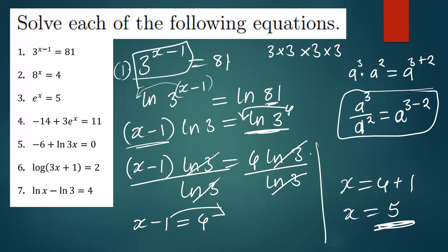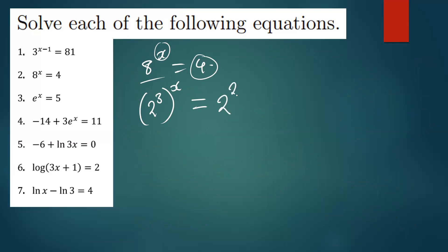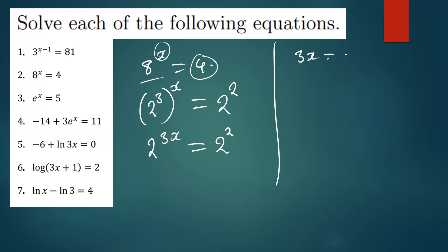The next question is 8^x = 4. We can express 8 in terms of 2 as 2^3, keeping the power x, giving (2^3)^x = 2^(3x). We express 4 as 2^2. So 2^(3x) = 2^2. Since the bases are equal, the powers are also equal, meaning 3x = 2.